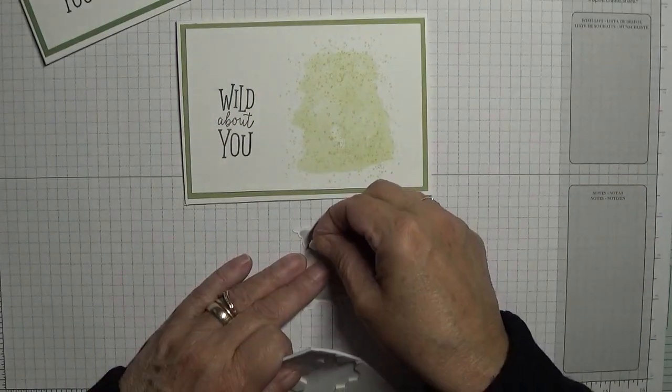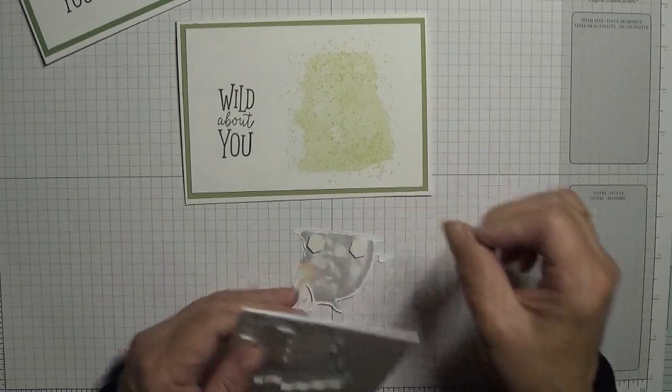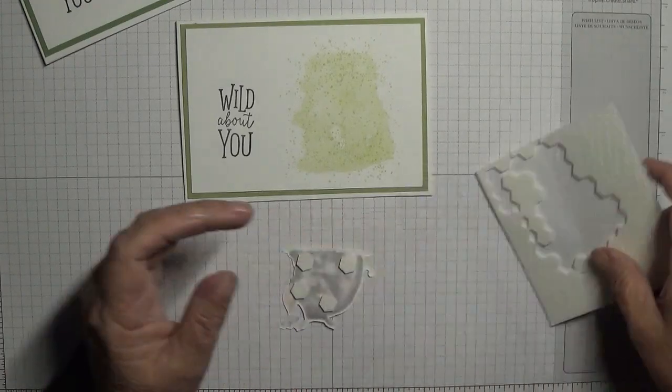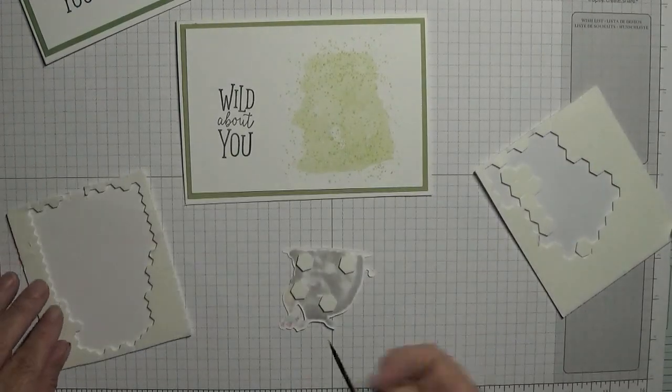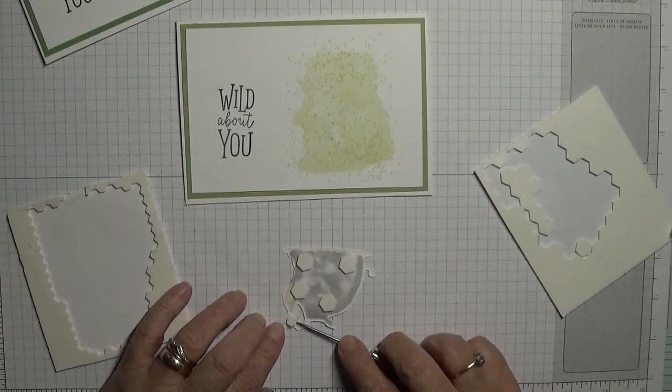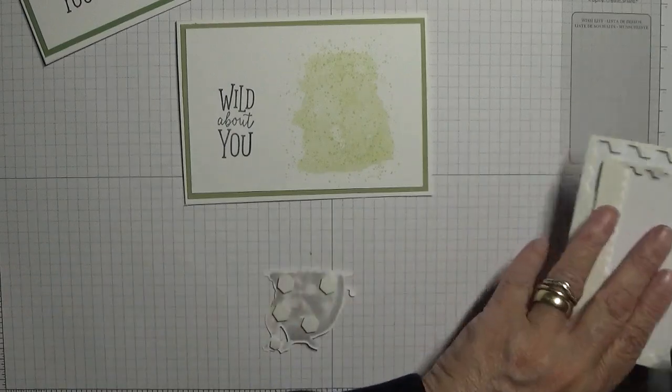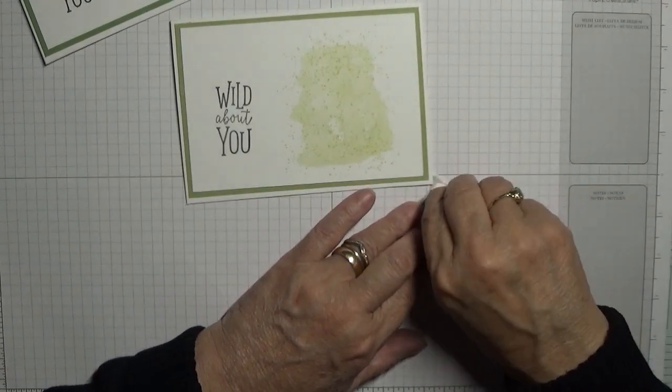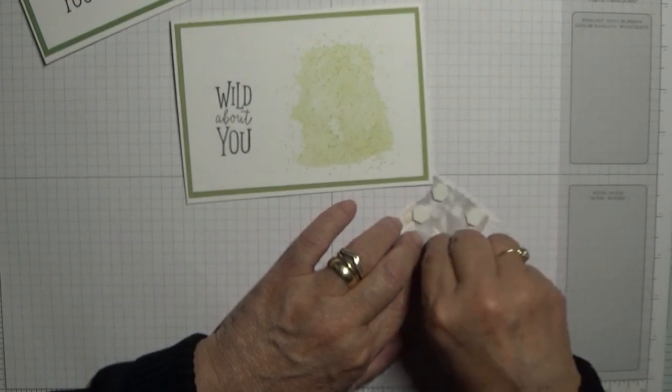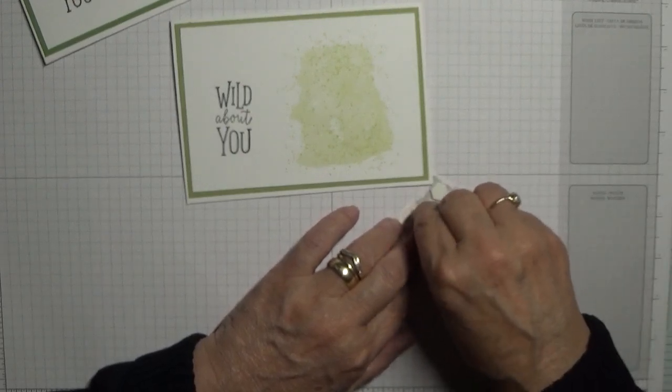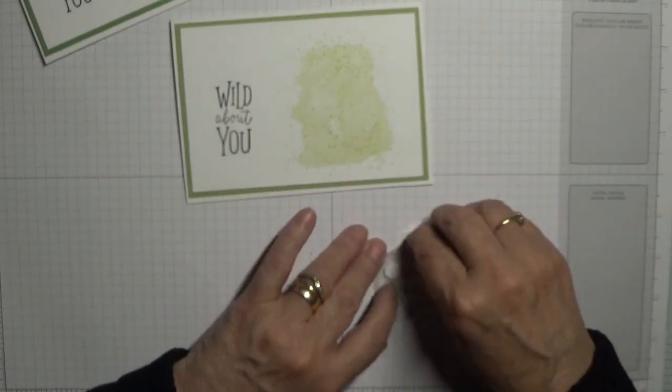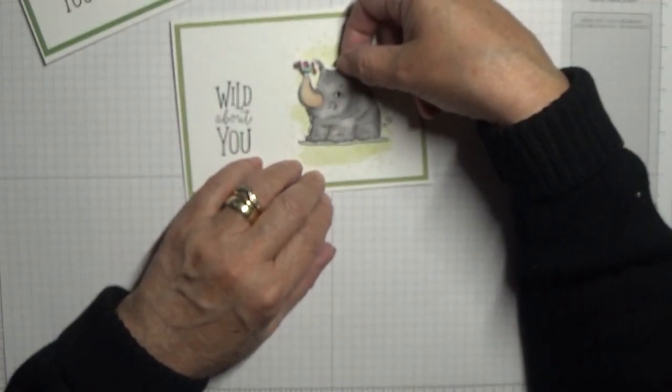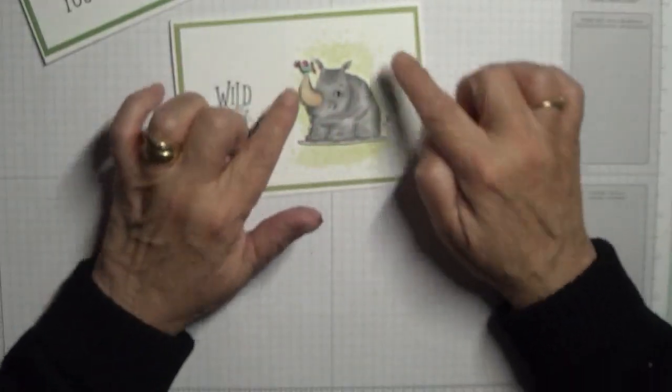And then this needs just to be popped up on dimensionals. There's a few dimensionals. Just get a small one to put on the bird. Take the backs off and just place him on top of your background.